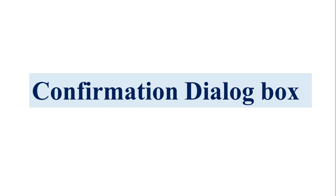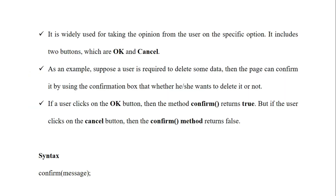Before going to the example, let's see what the confirm dialog box is and what its syntax is. The confirm dialog box is widely used for taking an opinion from the user on a specific option. It includes 2 buttons: OK and Cancel. The alert dialog box has only one button — OK — but the confirm dialog box has 2 buttons. If the user wants to continue, they click OK; if not, they click Cancel.